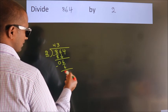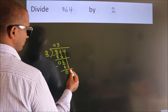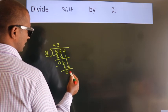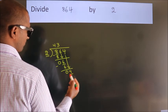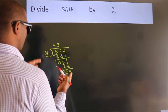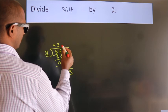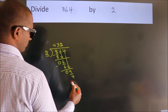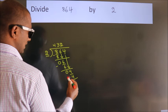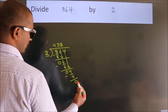After this, bring down the beside number, so 4 down, so 4. When do we get 4? In two's table, 2 twos are 4. Now we subtract, we get 0.